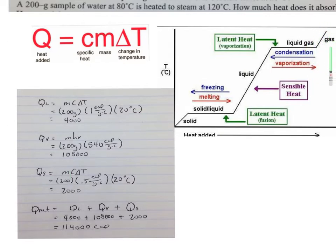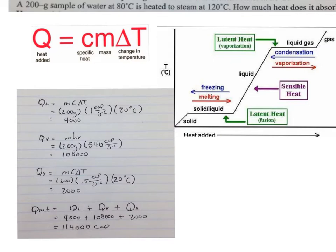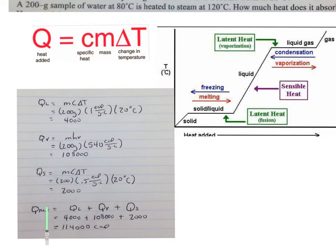Finally, Q sub S for steam: 200 grams times specific heat of steam (0.5 calories per gram degree Celsius) times 20 degrees — from 100 to 120 degrees Celsius. Adding Q sub L + Q sub V + Q sub S gives the net energy required for this process.